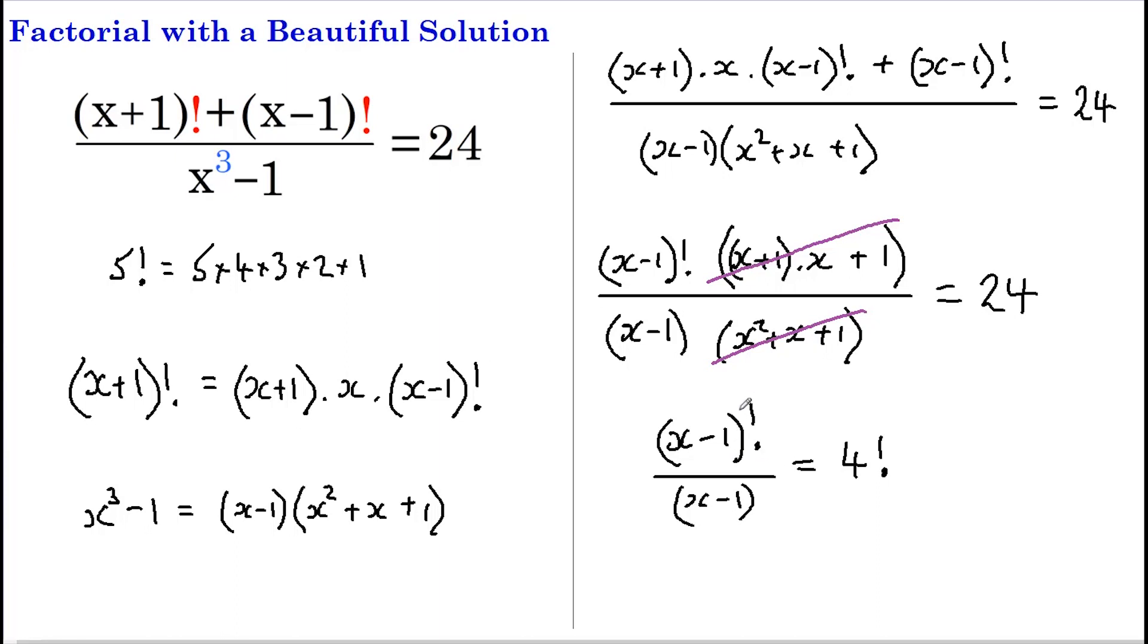Therefore, we can cancel the first term (x-1) with the term below (x-1), and that leaves us with (x-2) factorial, and that still equals 4 factorial.